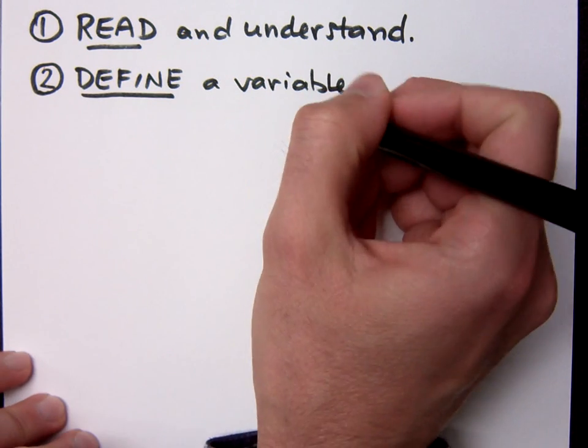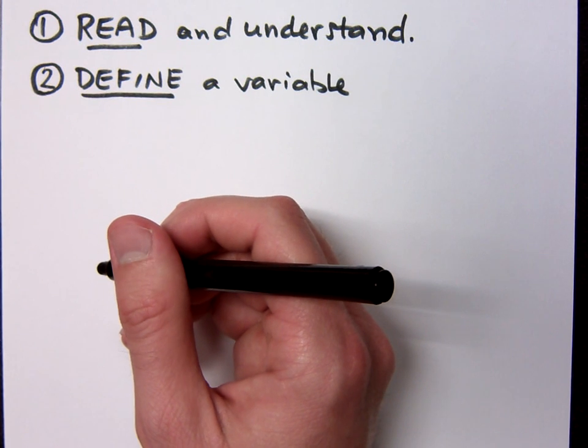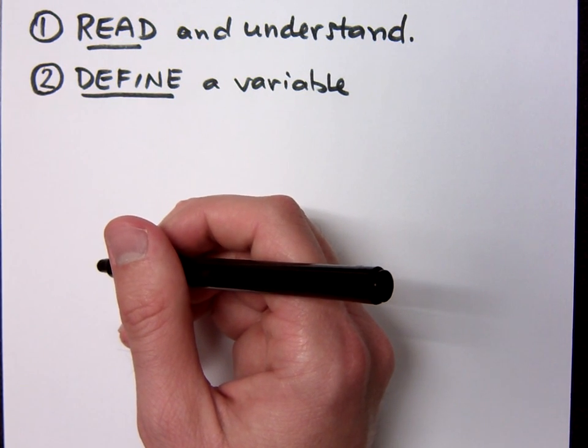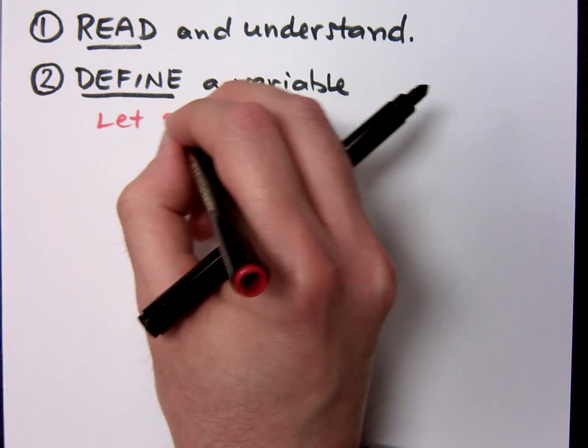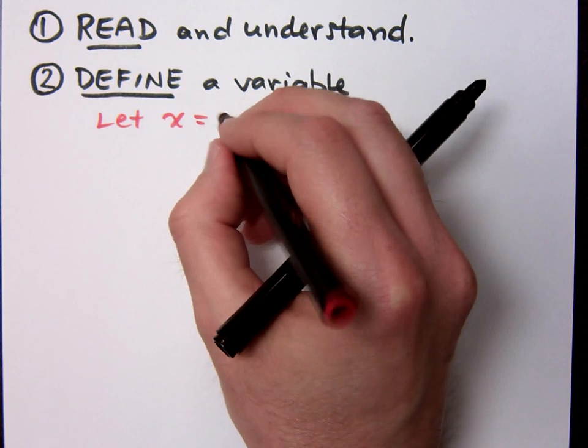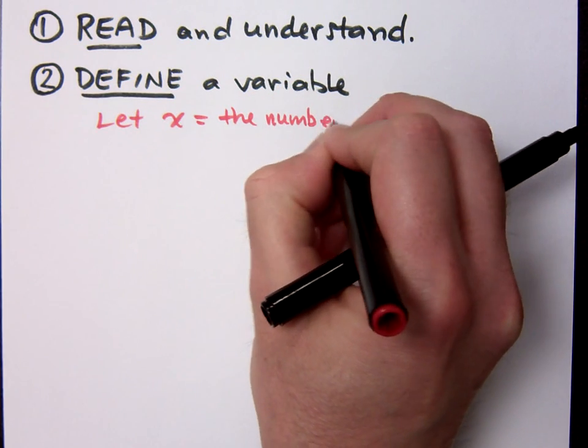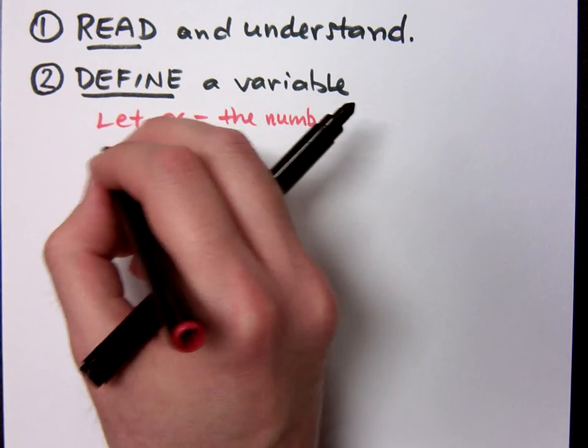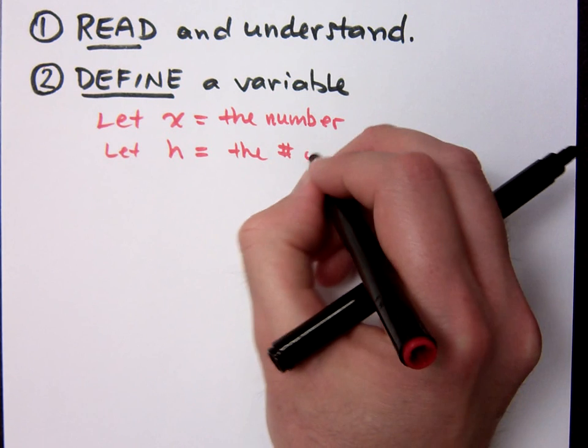When I say define a variable, this does not mean the variable is a letter or symbol that represents some unknown value. Don't give me the definition, but you tell me what you're going to let the variable represent. It could just be something as easy as let X equal the number.